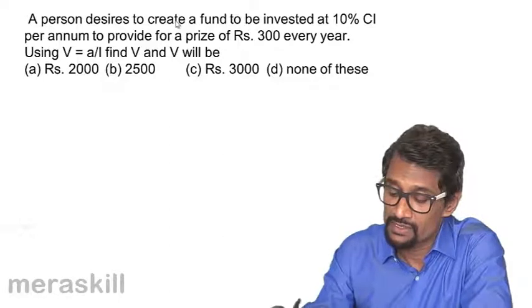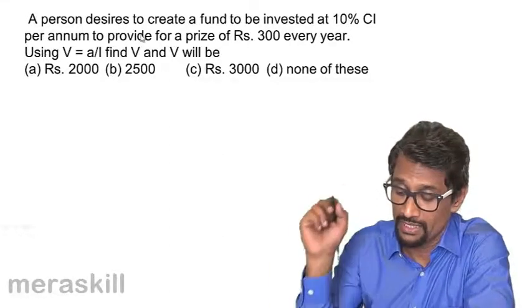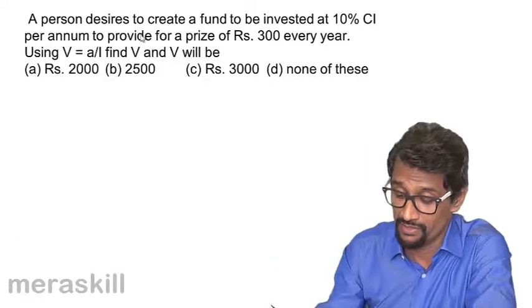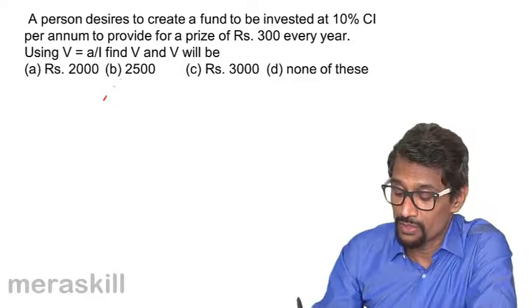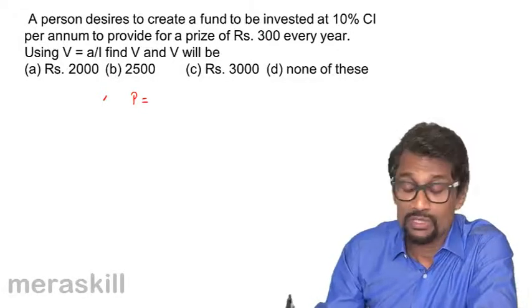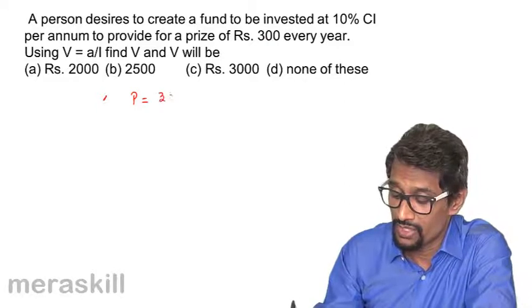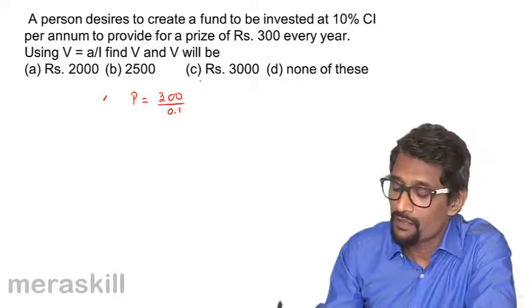a person desires to create a fund to be invested at 10% compound interest per annum to provide for a prize of Rs. 300 every year. In that case, how much does he have to deposit? The present value P is 300 upon 0.1, which